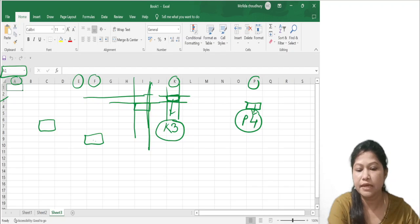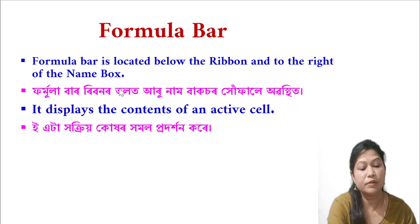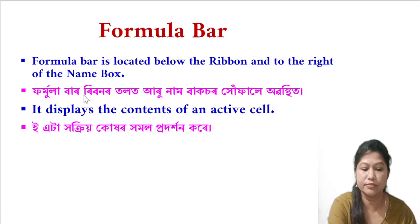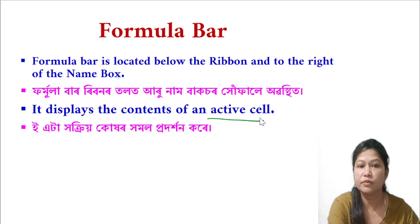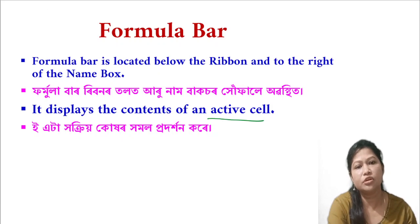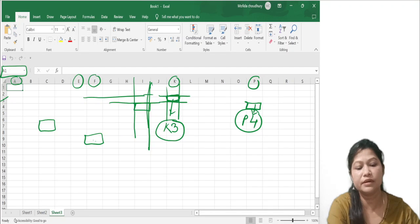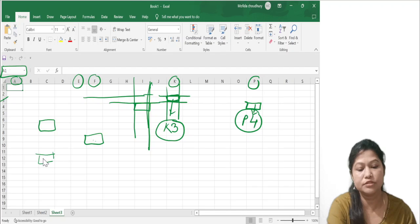Next is the formula bar. The formula bar is located below the ribbon and to the right of the name box. It displays the contents of the active cell. When we select a cell, the formula bar shows the contents of that cell.